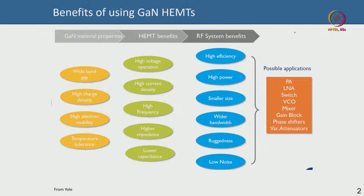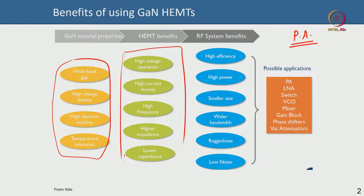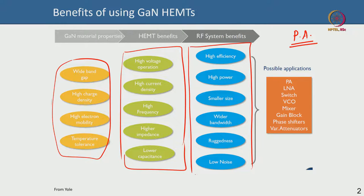Especially for power amplifier applications, gallium nitride offers tremendous benefits. On the material front there are advantages that translate to device-level advantages, which in turn translate to system-level advantages. Because of the higher band gap of gallium nitride, you have a higher breakdown field of around 3 MV/cm theoretically.